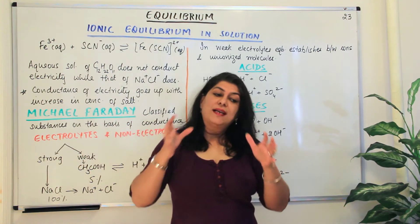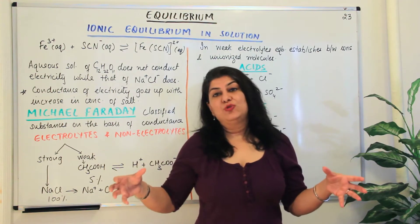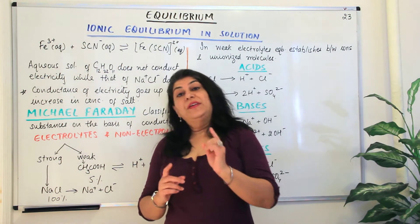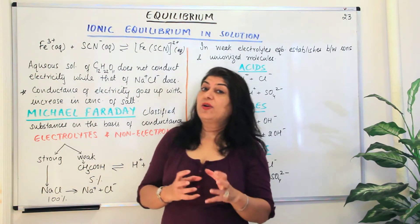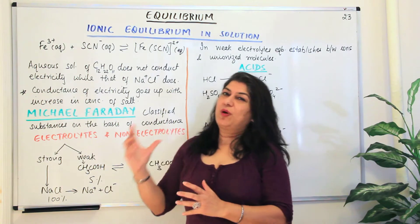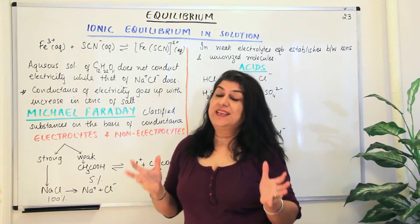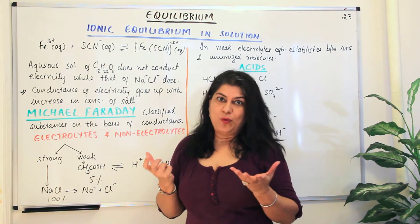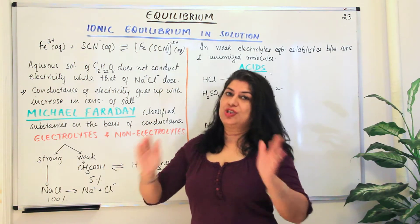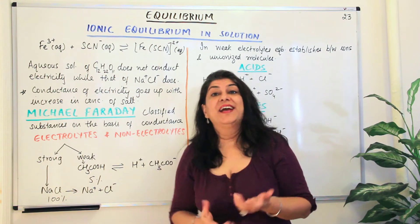This ionic compound dissociates in solution and therefore establishes an equilibrium. There is one more difference between ionic and covalent compounds: ionic compounds, because they have positive and negative charged particles, if you put them in water and they ionize, they tend to conduct electricity. Electricity is nothing but moving charges, and when charges are separated in the liquid, that liquid starts conducting electricity.